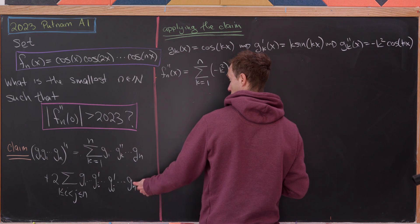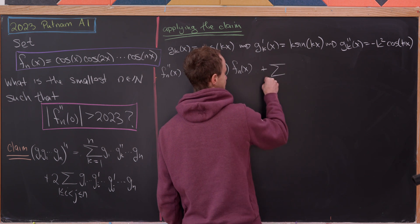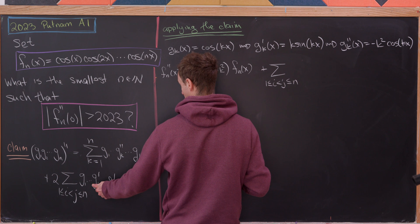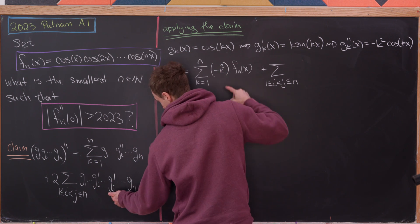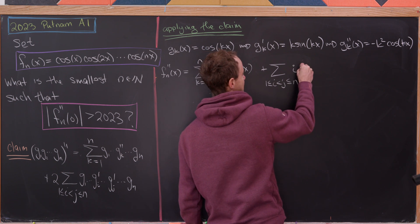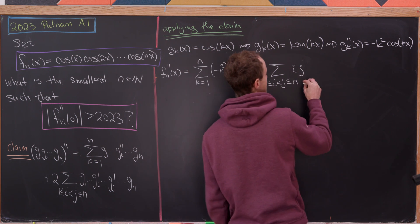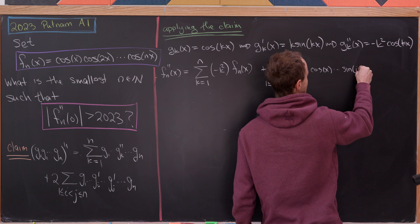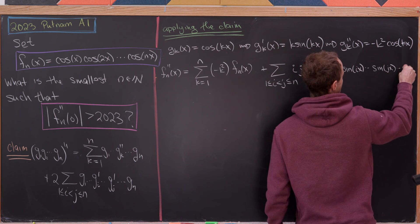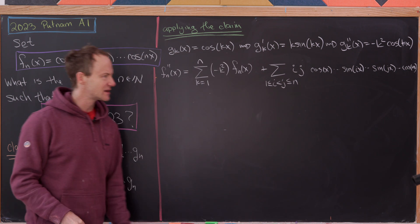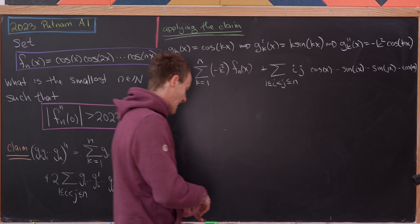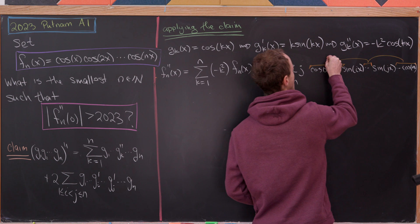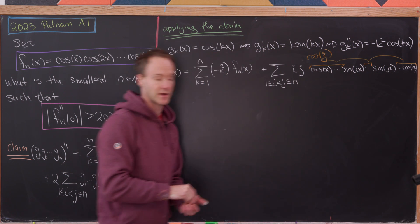For the cross first-derivative terms, we have the sum over i < j from 1 to n of the product with a sine of ix and a sine of jx replacing the usual cosines at those positions, picking up multipliers of i and j. All other terms in the product remain cosines. So the formula is written, and now let's see what happens when we evaluate at zero.